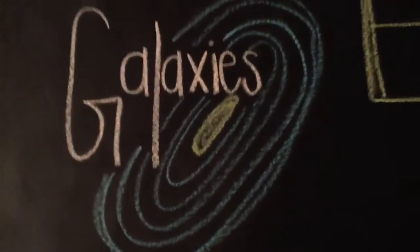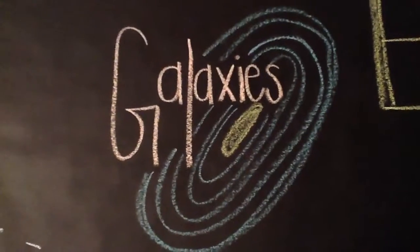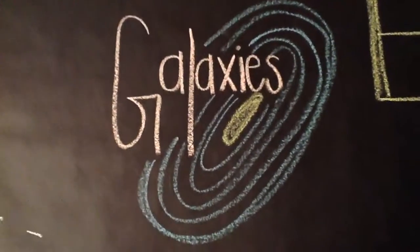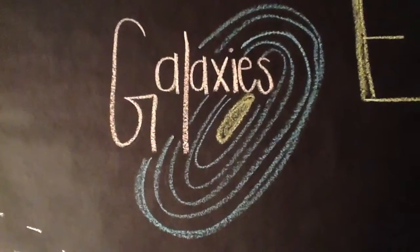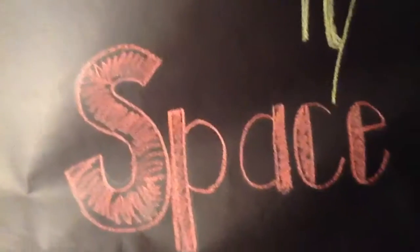Finally, we have galaxies, which are huge clusters of stars. There are varying types of galaxies. The universe is also composed of lots of empty space.